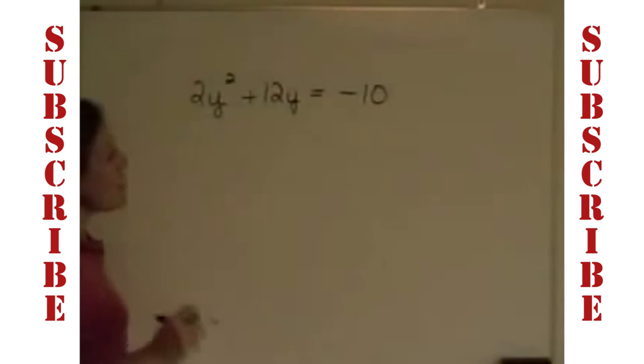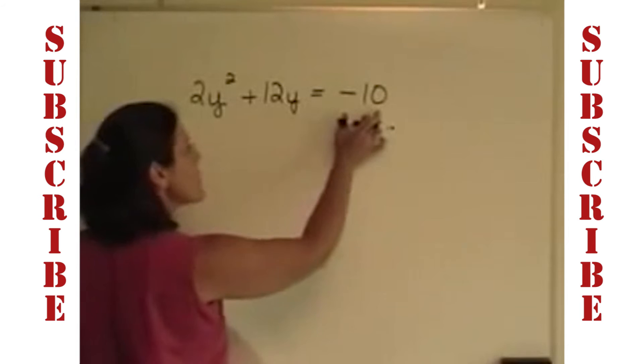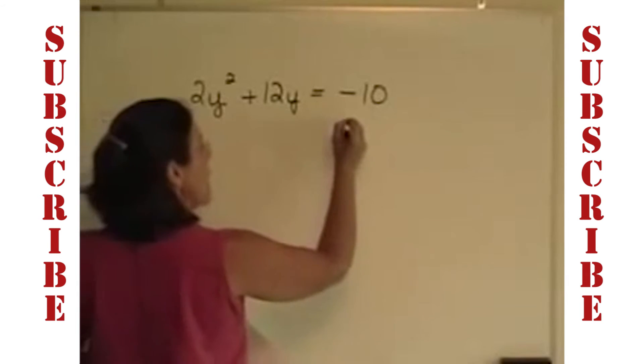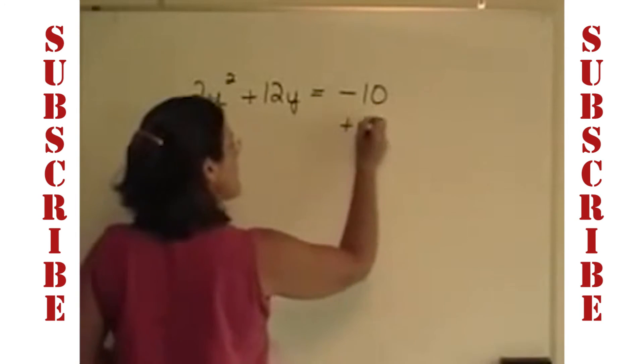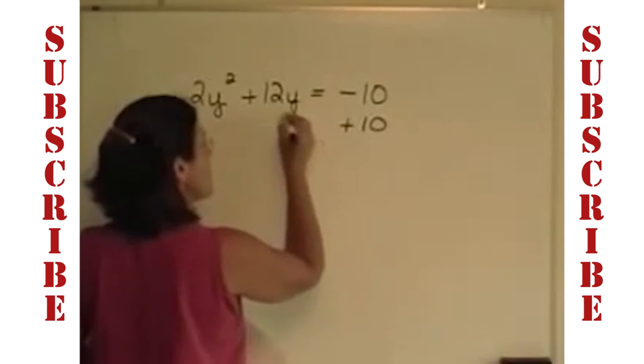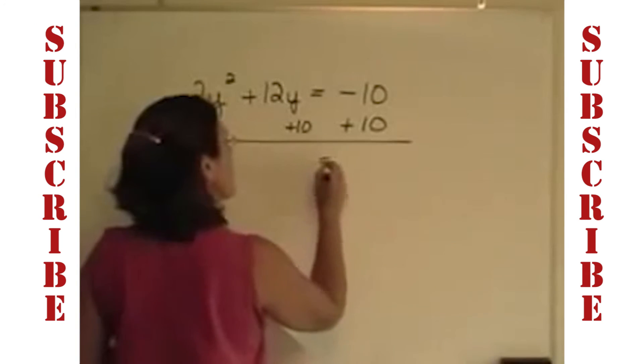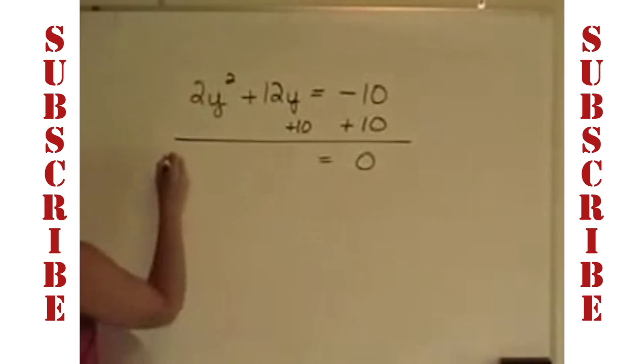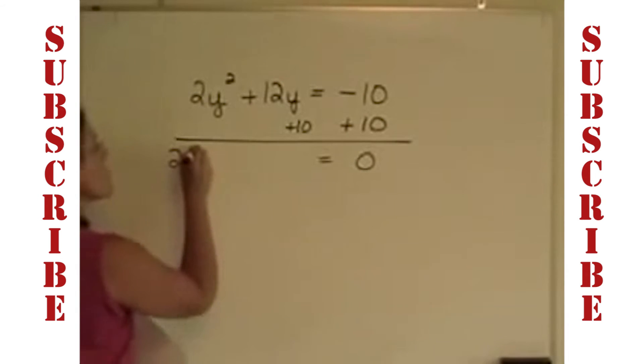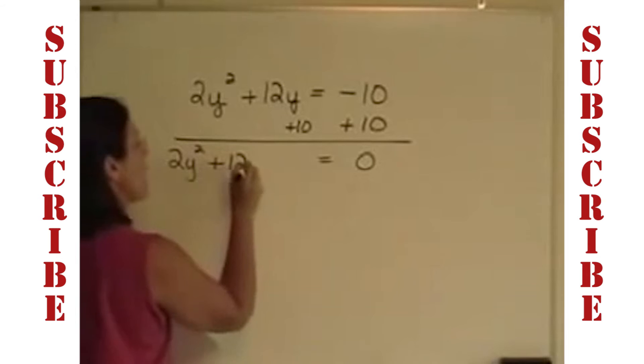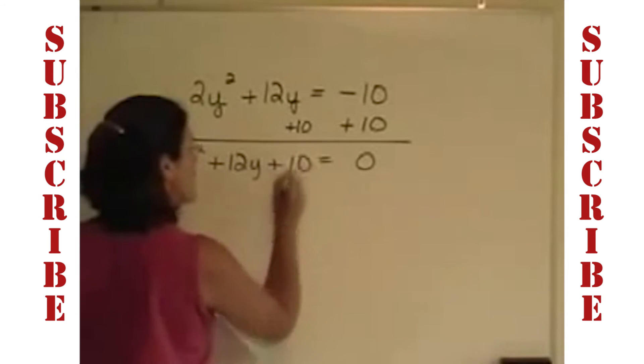This problem is not ready to factor yet, because I do not have 0 on one side of the equation. I'll show the step this time. I want to add 10 to both sides. I'm going to lean it to the right a little bit here, so that I don't have nothing on the right-hand side, and on the left, I'll have the 2y squared plus the 12y plus that constant of 10.